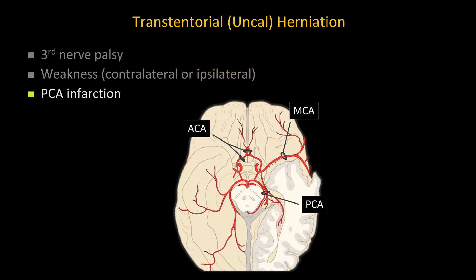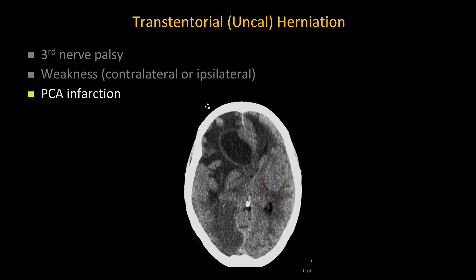Another potential complication is PCA infarction. Given the close relationship between the uncus and the adjacent PCA, uncal herniation can cause mass effect against the PCA, resulting in PCA infarction. This example shows a patient with right-sided uncal herniation causing right-sided PCA infarction.